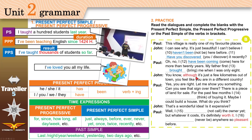'Although it's just a few kilometers out of town, you feel like you are in a different country.' 'Yes, let me show you something — can you see that sign? There is a piece of land for sale. For the past few months I have been thinking of buying it.' PPP: 'I've been thinking.' Note: 'think' as a stative verb means 'believe,' but here 'think' means 'consider,' so it is not stative — you can add -ing.